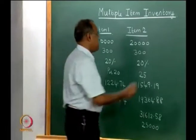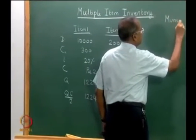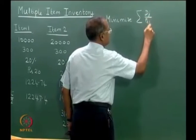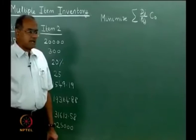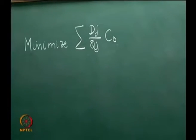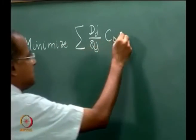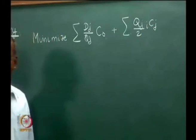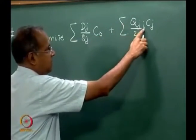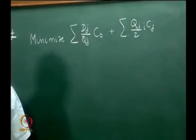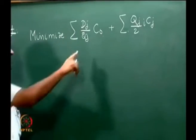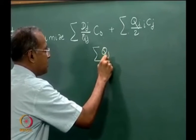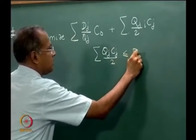This leads us to an optimization problem where we try to minimize the total cost: sigma of (Dj/Qj × C-naught) plus sigma of (Qj/2 × i × Cj), where Dj/Qj is the number of orders times order cost, and Qj/2 is the average inventory with i×Cj as the inventory holding cost per unit per year. This is subject to the condition that sigma of (Qj × Cj / 2) is less than or equal to some value B.